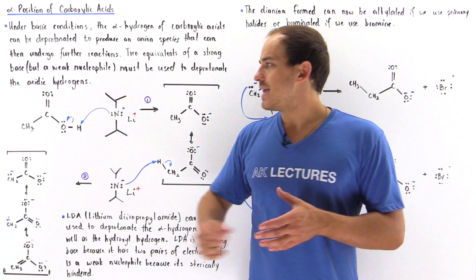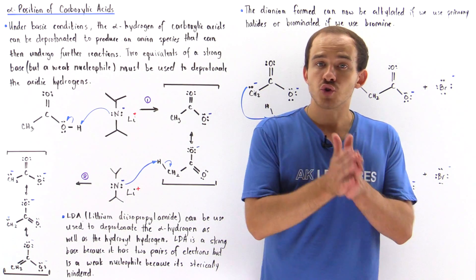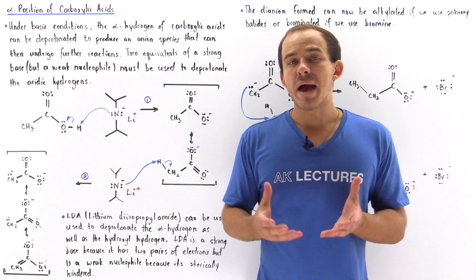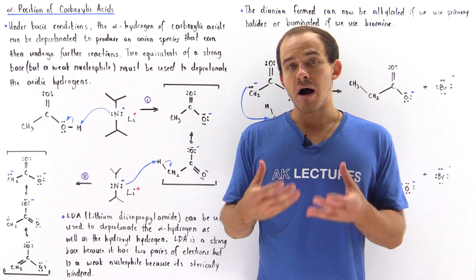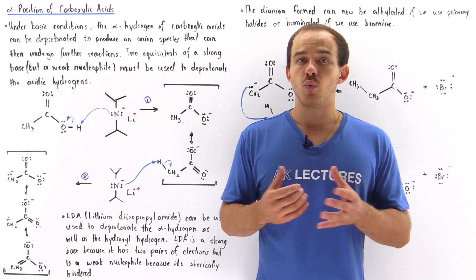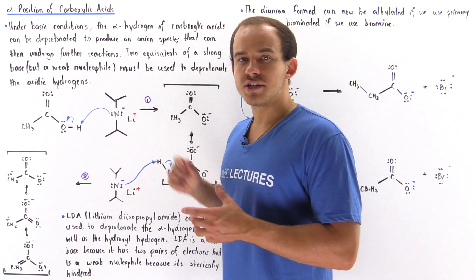So let's suppose we take a carboxylic acid as shown and we mix it with a strong base that is at the same time a bad nucleophile. One example of a molecule that is a good base but a weak nucleophile is LDA. LDA looks something like this.